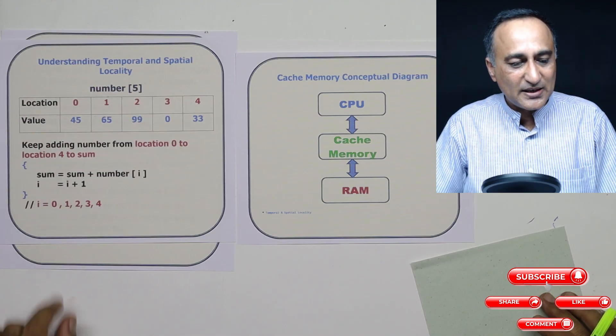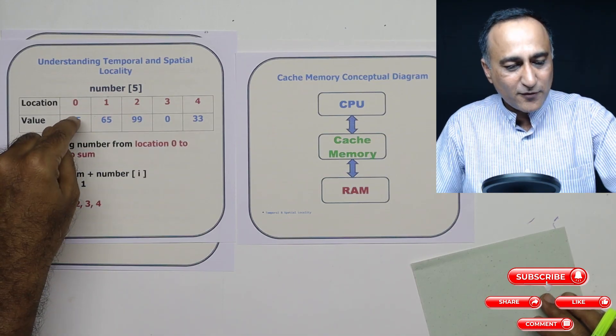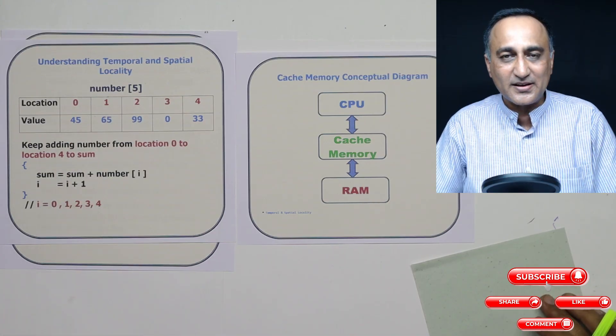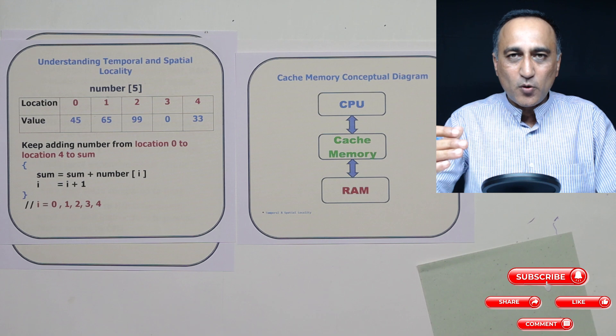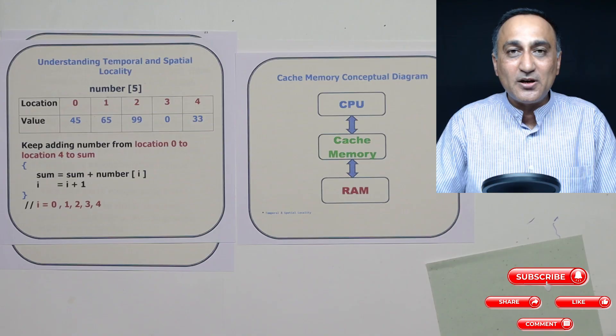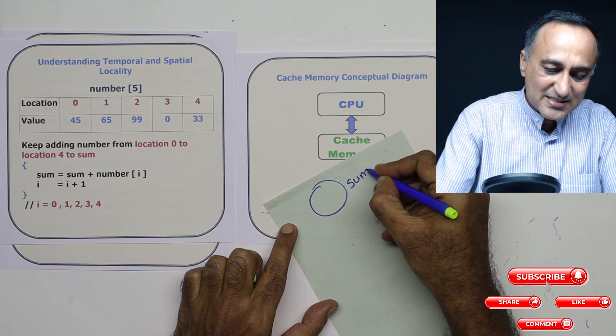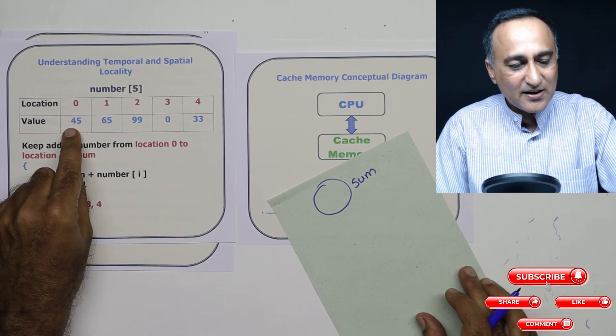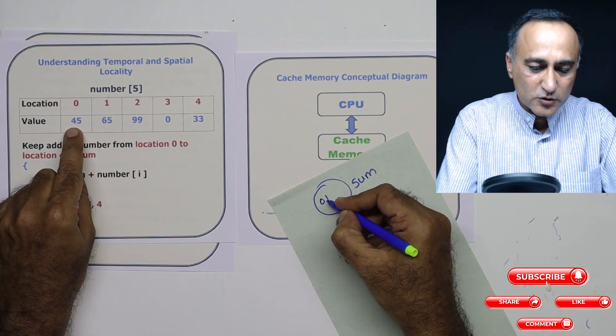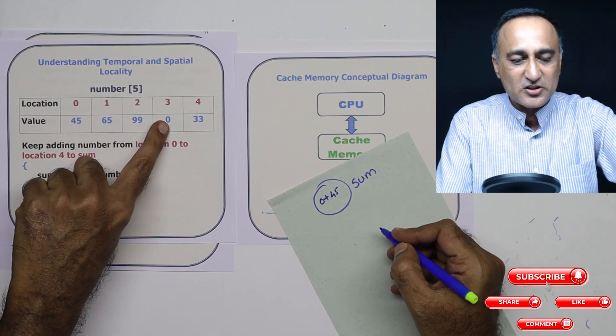Assume this is how your memory looks. This is memory location 0, 1, 2, 3, and 4, at 0 is 45, 1 is 65, 2 is 99, third location 0, fourth location 33. What I want to do is I want to write a small program which will simply add all of these numbers and store it in a variable or a memory location called sum. So what I do is I create a memory location called sum, and every time I start reading from this place and I add it to sum. So first time sum will be 0, so it will be 0 plus 45. Next time I'm going to add 65, then 99, 0, and 33.